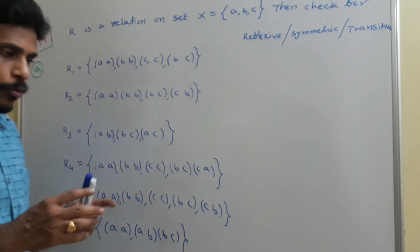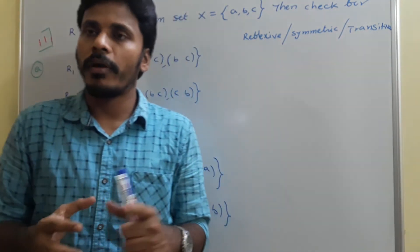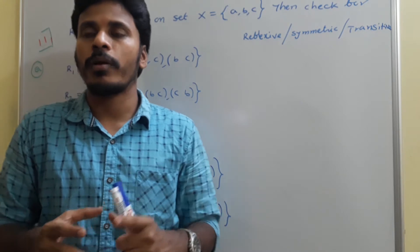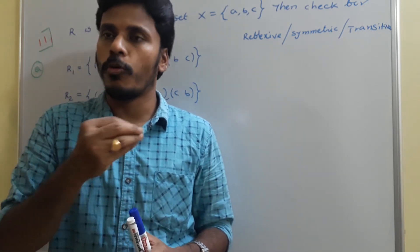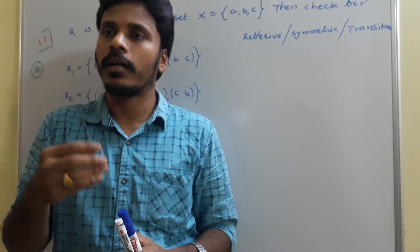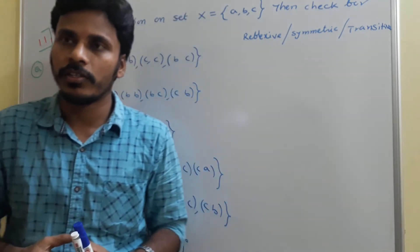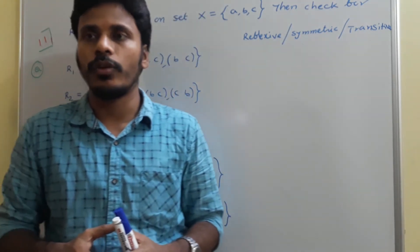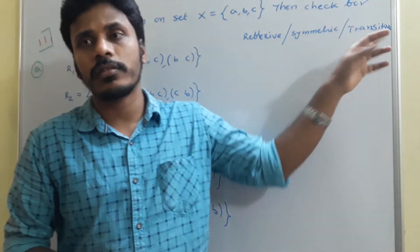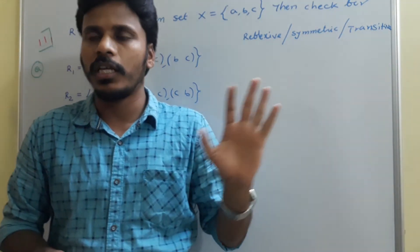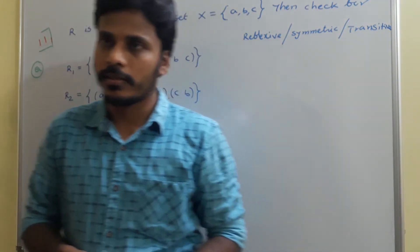Last class we discussed different properties: reflexive property, symmetric property, and transitive property. A relation satisfying these properties is called a reflexive relation, symmetric relation, and transitive relation respectively. A relation that satisfies all three properties is called an equivalence relation.